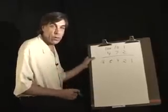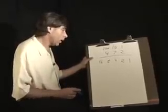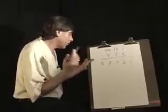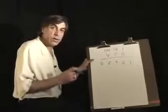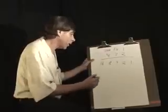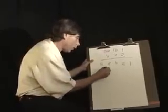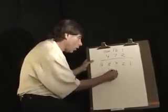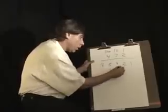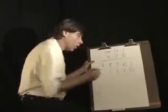So if a computer wants to think of the number, let's say 14, it's 1 eight, 1 four, that's 12, 1 two, and no ones.